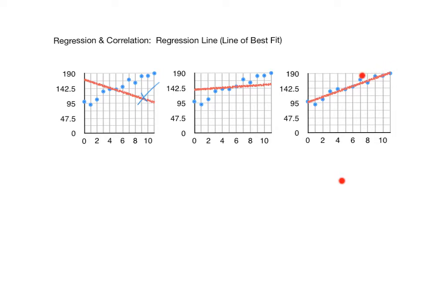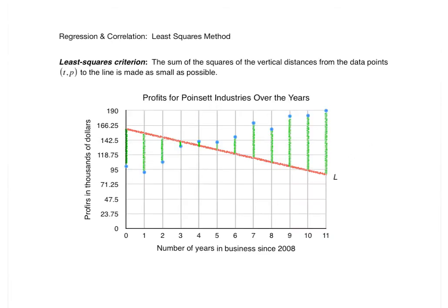So the question is: how do we get a line like this and its equation? The method for finding the line of best fit is known as the least squares method, and it's based off the least squares criterion. You're not going to be expected to do this computation by hand — it is fairly involved. You will end up using Excel to not only plot the line but also give you the equation of the line of best fit. However, I'd like for you to understand the basic idea of where this comes from.